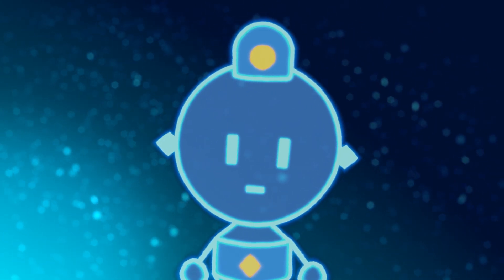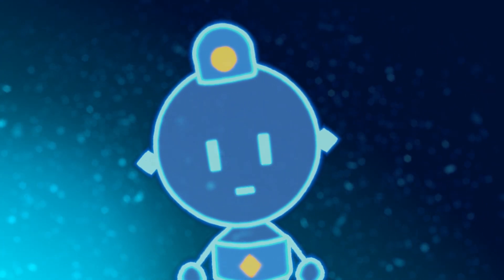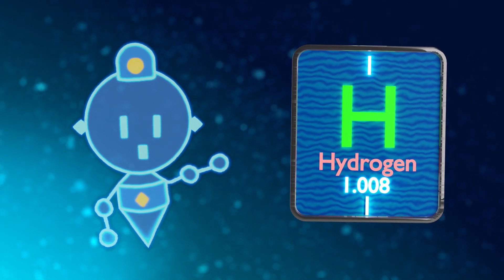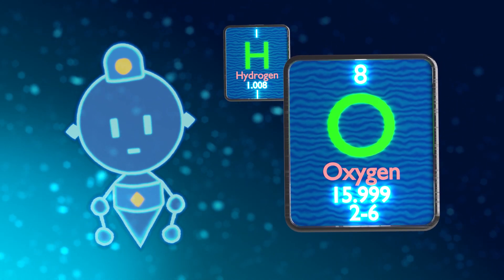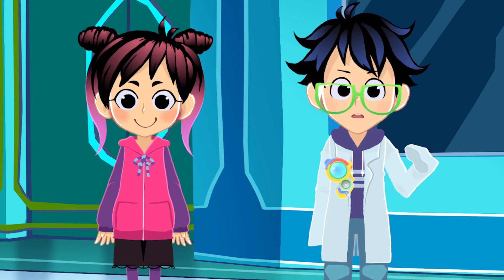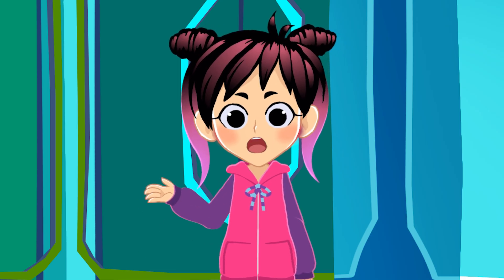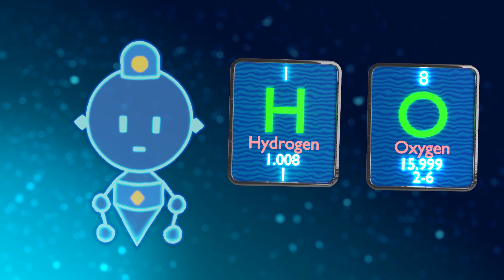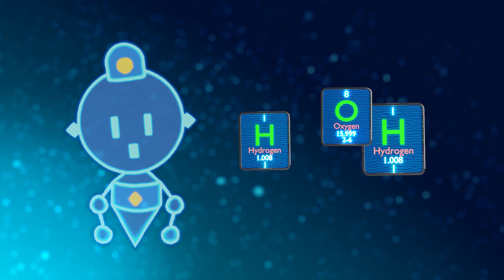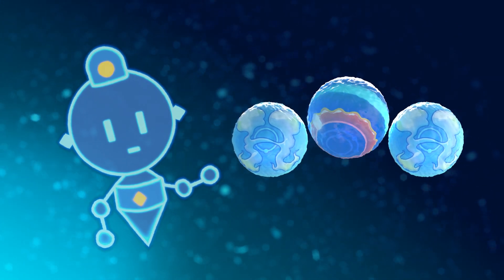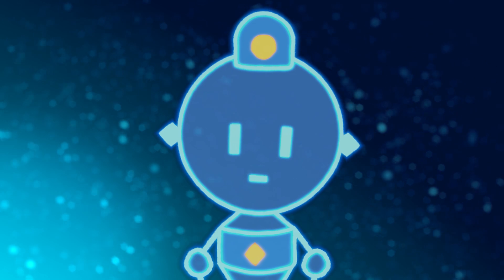My number one favorite element is a tie! I just can't choose a favorite between hydrogen and oxygen — they're both incredibly vital elements. Hydrogen, or H on the periodic table, is the most abundant substance in the universe. Oxygen, or O, is necessary for human beings to survive! Because as incredible as these two elements are on their own, they're even better when you combine them! By adding two hydrogen atoms to one oxygen atom, you get the chemical compound H2O, or water — a colorless, flavorless substance that is necessary for life on Earth.